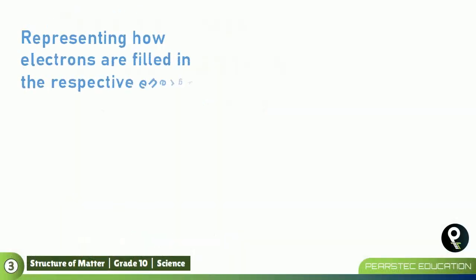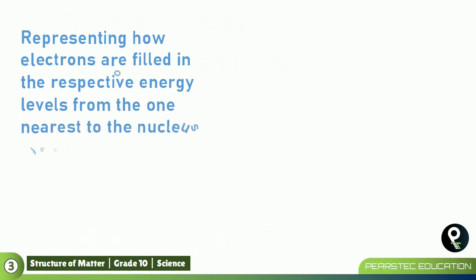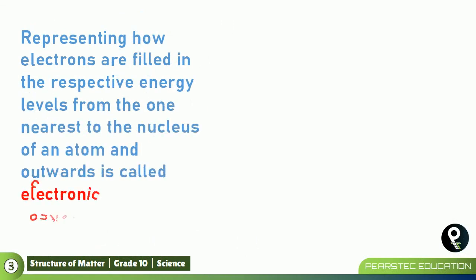Representing how electrons are filled in the respective energy levels from the one nearest to the nucleus of an atom and outward is called electronic configuration. That's a lot of definition. When you are trying to memorize this, you definitely will have difficulties. But if you understand the lesson, it's not going to be very hard. So let's understand that one.